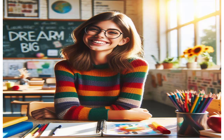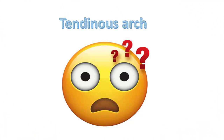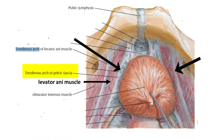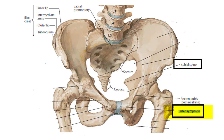Another modification of the parietal pelvic fascia is the tendinous arc, a thickened band of connective tissue formed on either side of the pelvis. It plays a crucial role in supporting pelvic organs, especially in females, and provides attachment to pelvic floor muscles like levator ani. Anteriorly it originates from the posterior surface of the pubic symphysis, and posteriorly it extends to the ischial spine.